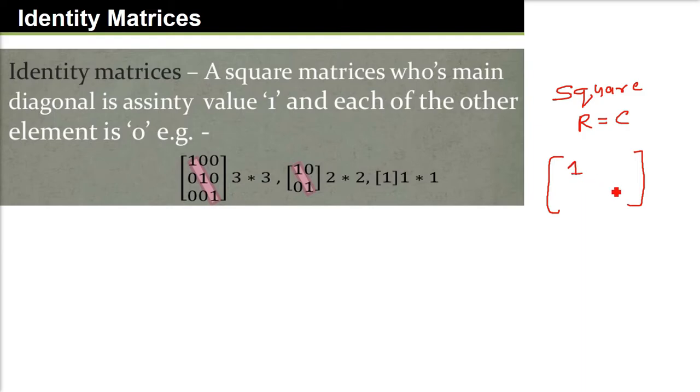See, if I am writing 1, 1 at the diagonal, just assume it to be a square, the diagonal has 1, 1, other values are 0. So this kind of matrix are called as identity matrix.